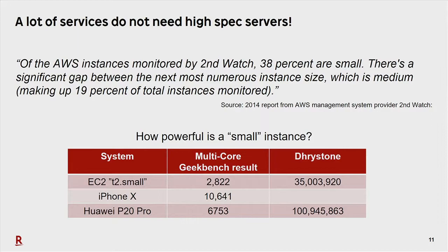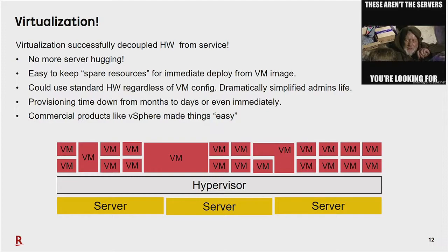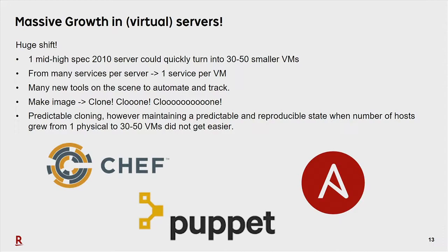Add the fact that most services don't need high-spec servers. Today, the majority of servers in something like AWS are small instances. A report by AWS management system provider SecondWatch back in 2014 revealed that 38% of instances in AWS are defined as small. I ran some benchmarks this week — EC2 T2 small got a 2,800 score on Geekbench; my iPhone X got 10,600. The majority of web servers and applications out there today from small companies actually run on those T2 smalls. So virtualization was all set up — no more server hogging. You successfully decoupled hardware from service. People didn't need to buy servers; they were happy getting a virtual machine instead. Provisioning time went down, and administrators were very happy because suddenly they could use one hardware config no matter what was configured on top. Everybody was happy.